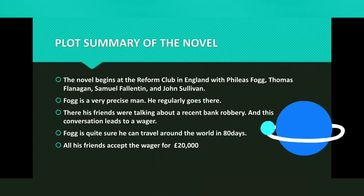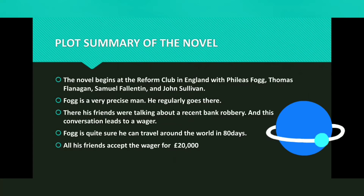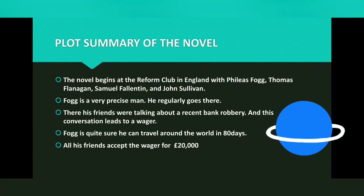We are introduced to Fogg, a very precise man who regularly goes to the Reform Club every evening. At the Reform Club, Fogg, Flanagan, Valentin, and Sullivan are talking about a recent bank robbery. This conversation leads to a wager — 'wager' means 'bet.' Fogg is quite sure he can travel around the world in 80 days, while Sullivan doesn't believe it can be done.